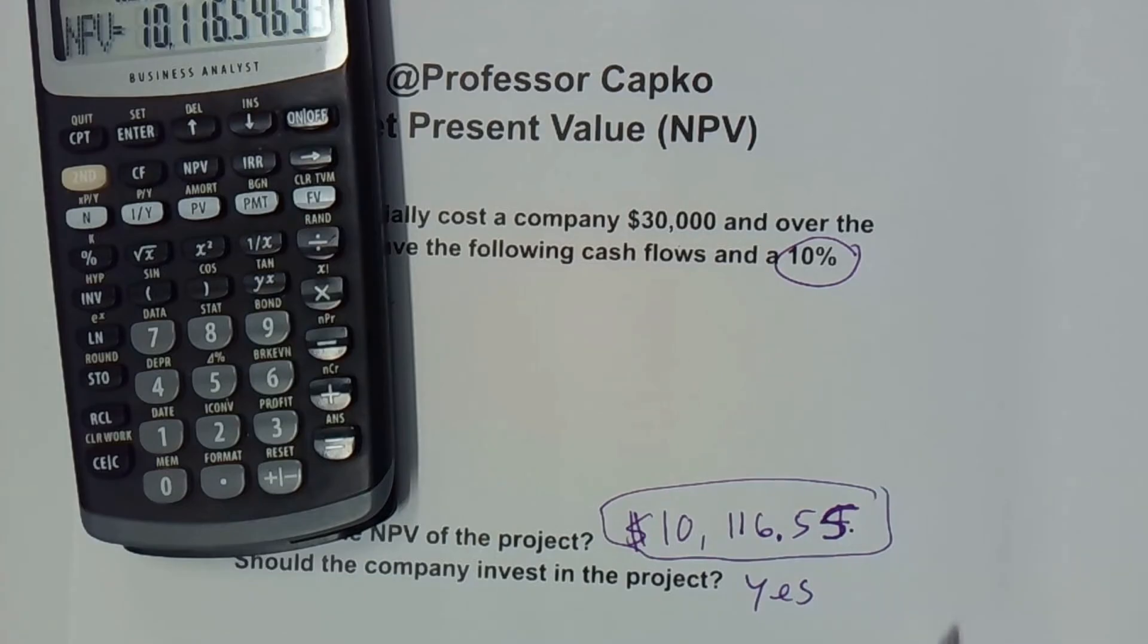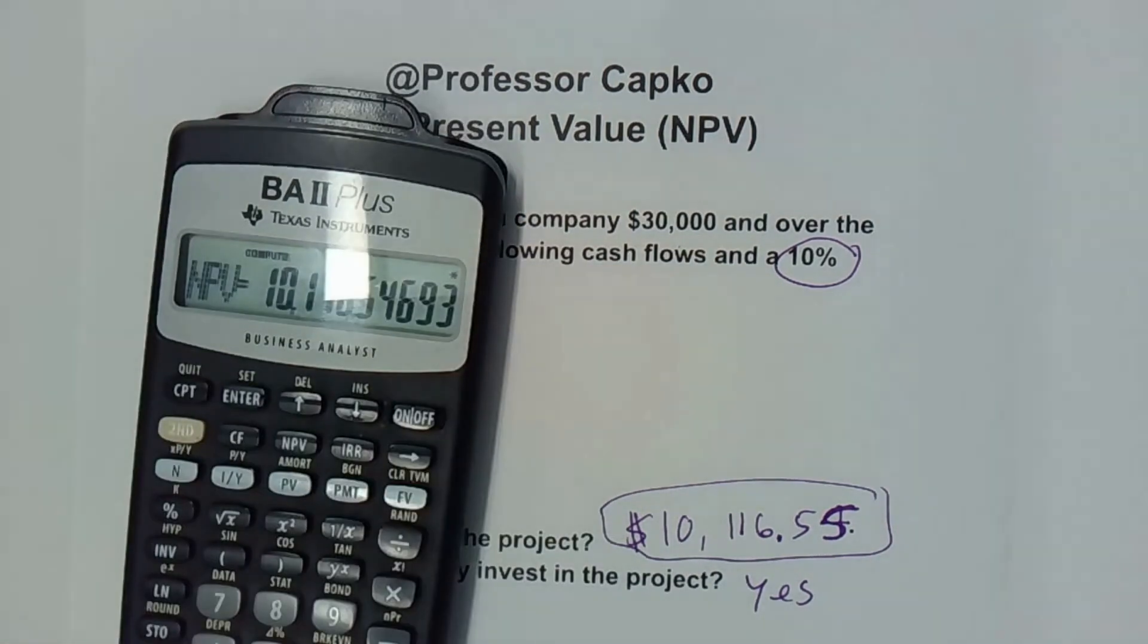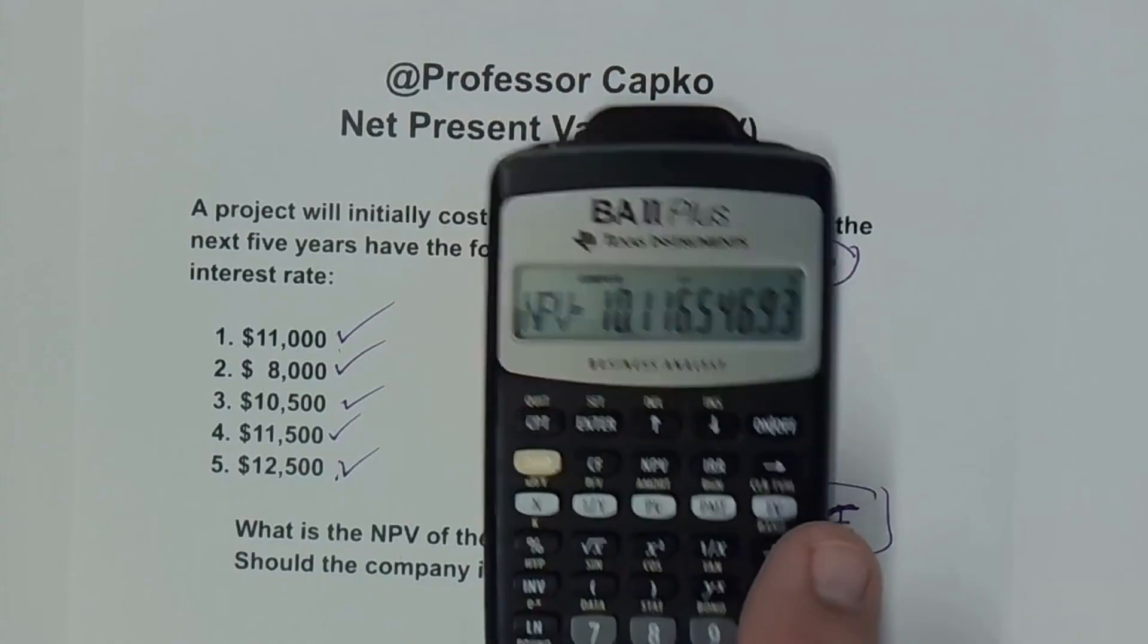If it were a negative net present value, the company should not invest in it. So that's how you calculate net present value using a Texas Instruments BA2 Plus calculator.